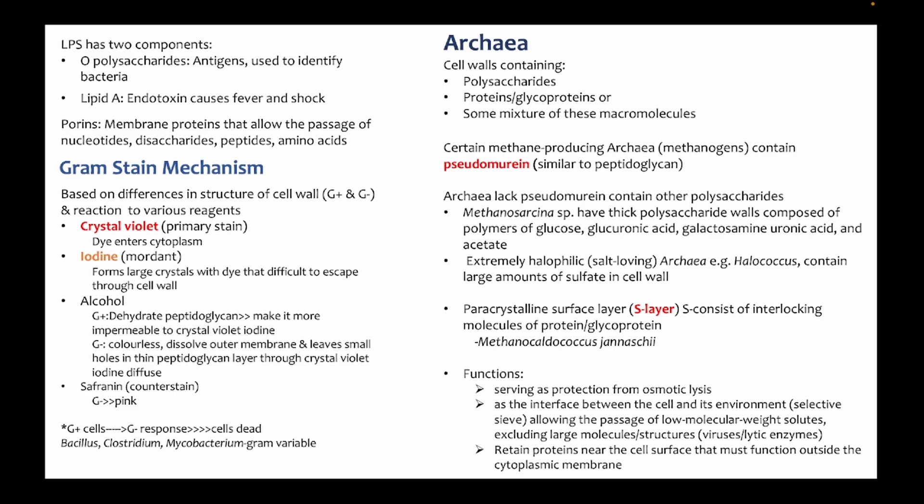Regarding gram staining issues — some cultures may not all appear purple. A few possible reasons: the culture might be old, and old cultures don't hold the stain well because the integrity of the cell wall is already weakened. It could also be dead cells caused by overheating the smear during fixation.